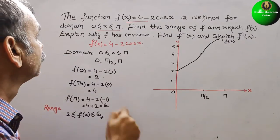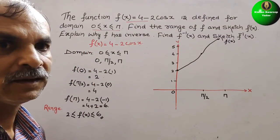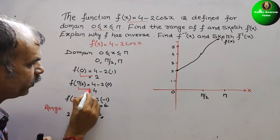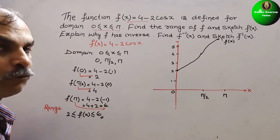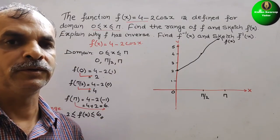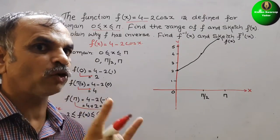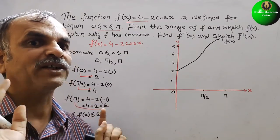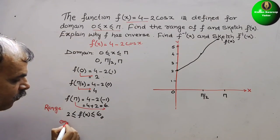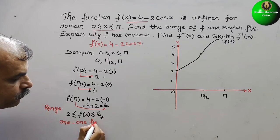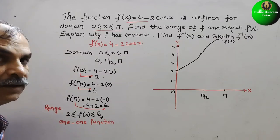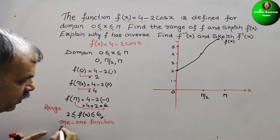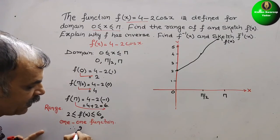Next, explain why f has an inverse. When x=0 we got 2, x=π/2 we got 4, x=π we got 6 — each input gives a unique output. So f is a one-to-one function. If we have a one-to-one function, then we have an inverse. Therefore, f has an inverse.